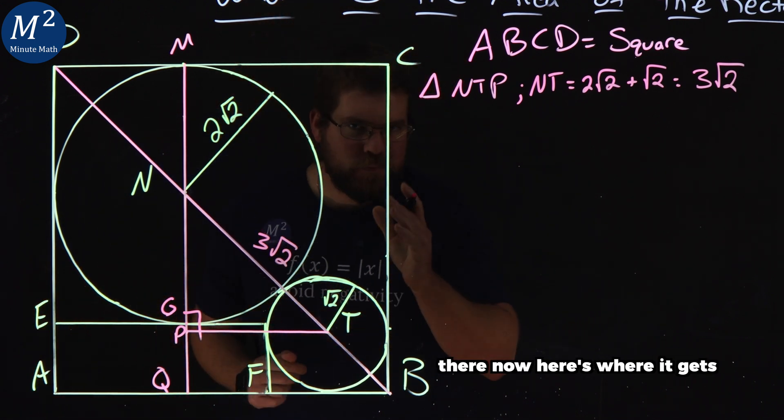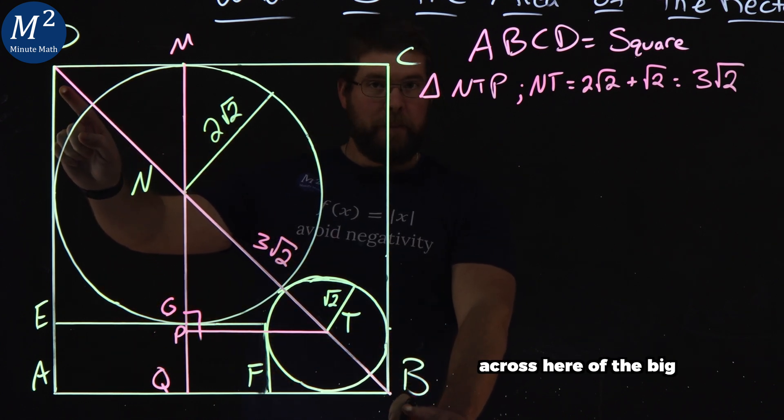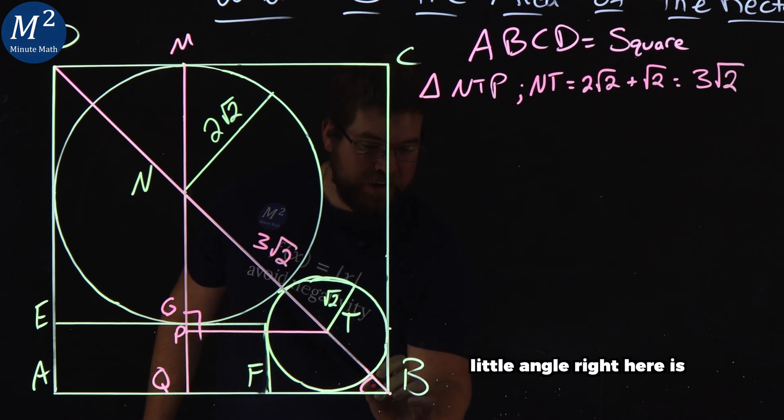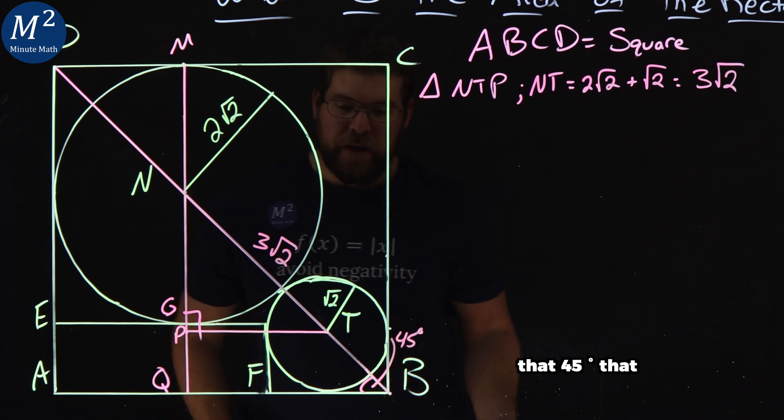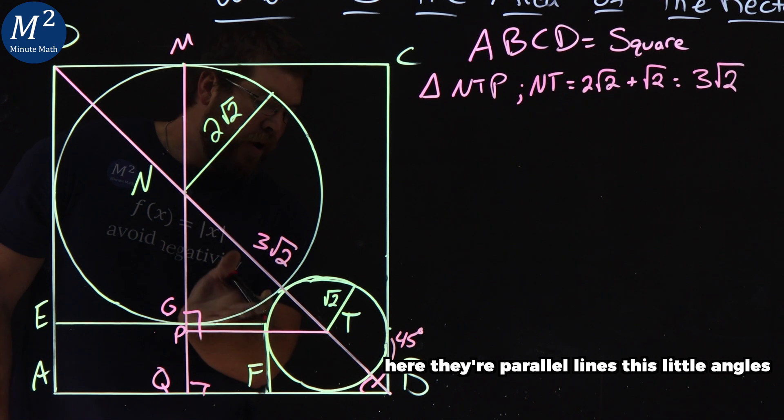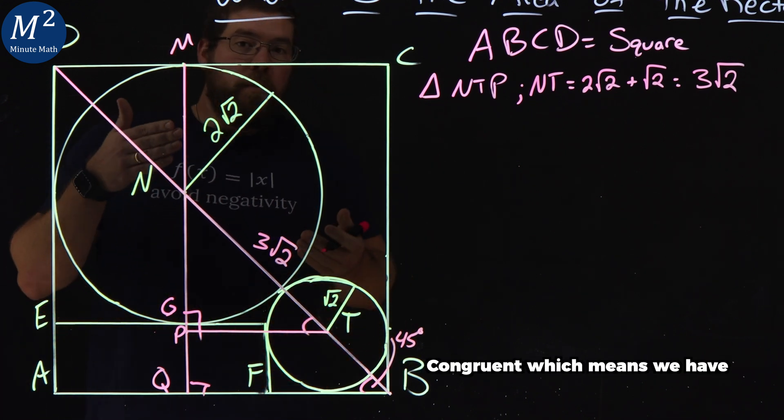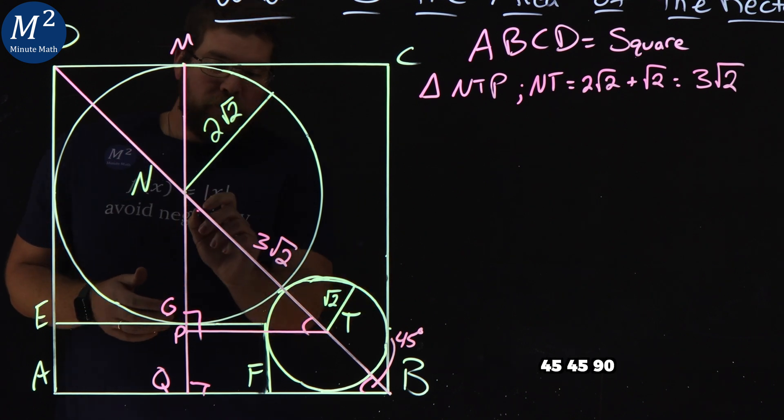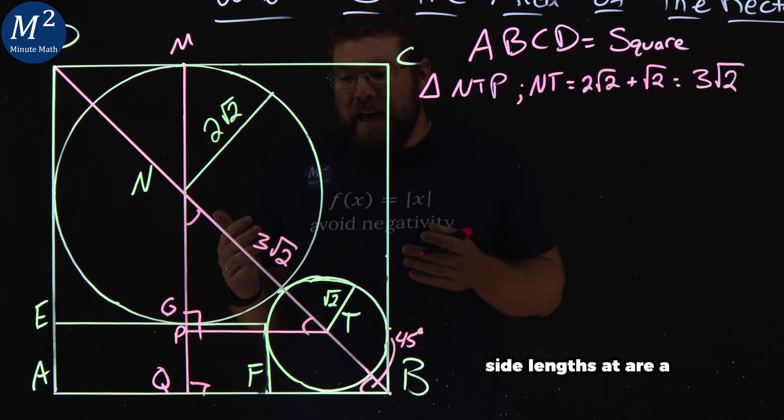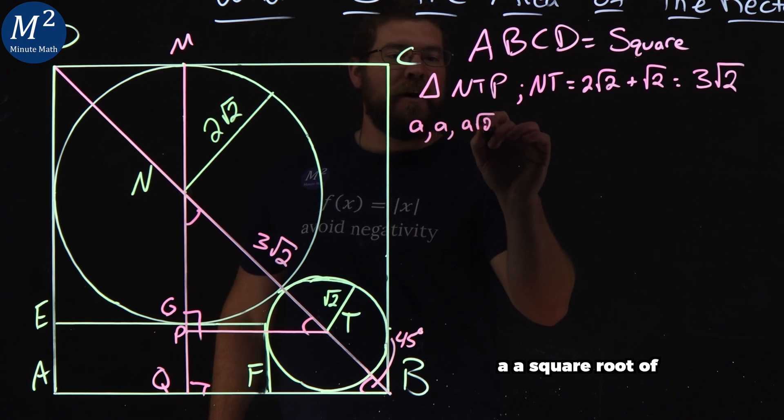Now, here's where it gets interesting. Notice when we drew the diagonal across here of the big square, right angle is a square. That means this little angle right here is 45 degrees. That angle, because this is a right angle, we have a right angle down here. They're parallel lines. This little angle is also 45 degrees congruent, which means we have a 45-45-90 degree triangle, special triangle that has side lengths that are A, A, A√2.